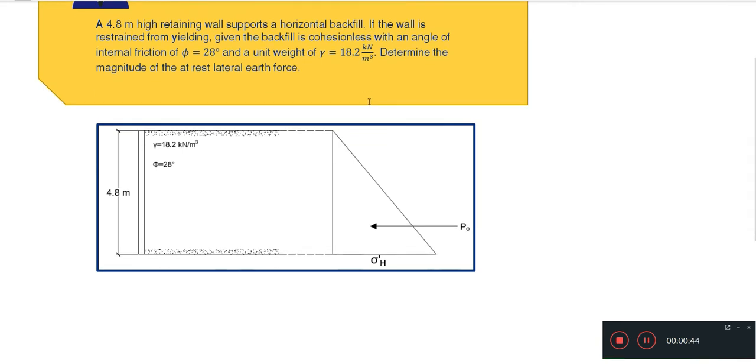So for this one, let's draw the retaining wall. The retaining wall looks like this since horizontal backfill and not inclined backfill is being supported. Then, we have gamma equal to 18.2 kN per cubic meter and the angle of internal friction which is 28 degrees.